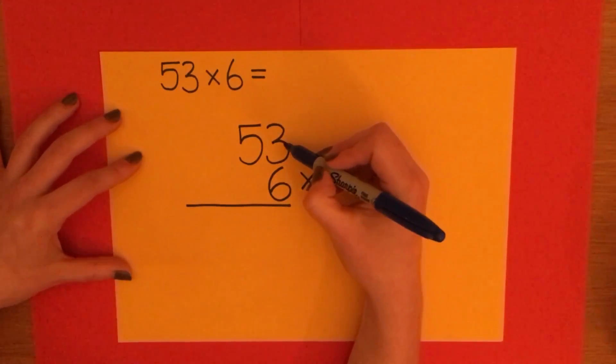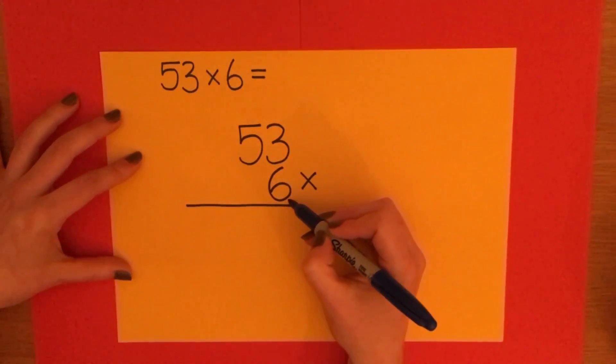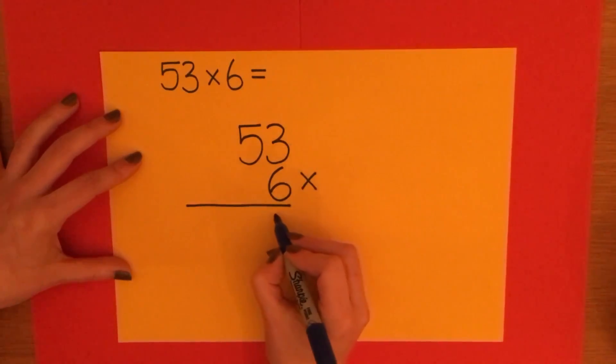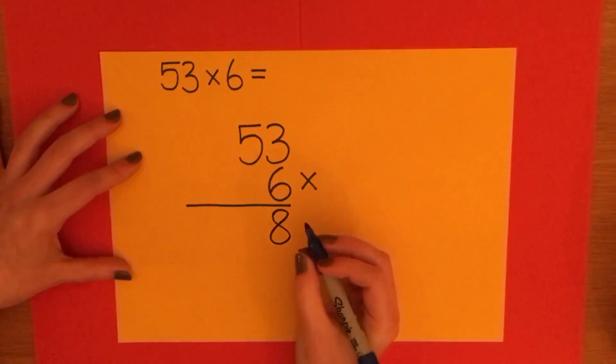So I need to do 3 times 6. 3 times 6 is 18. So I have 8 units. And because I'm not finished with my calculation yet, I need to carry the 1.